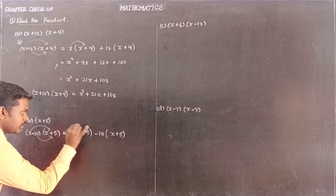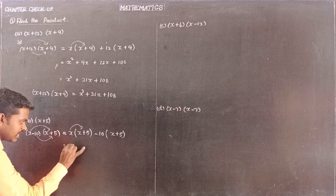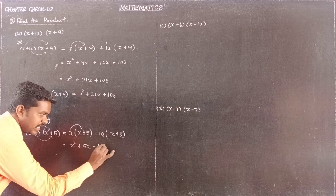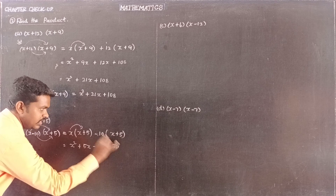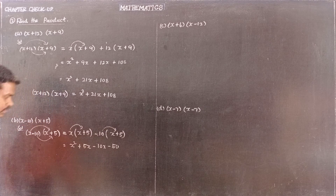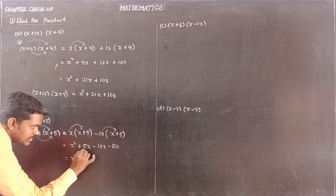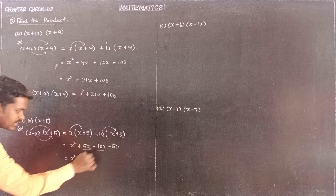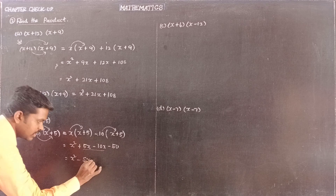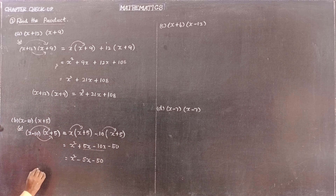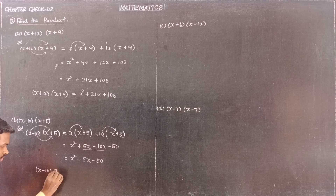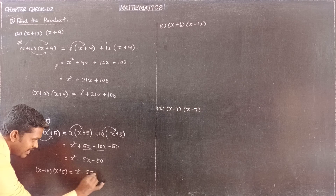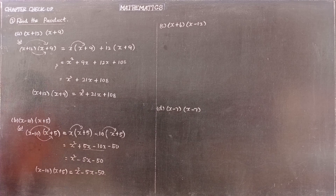Expanding: x into x gives x squared, plus x into 5 gives 5x; minus 10 into x gives minus 10x, minus 10 into 5 gives minus 50. Combining like terms: 5x minus 10x gives minus 5x. Therefore, x minus 10 into x plus 5 is equal to x squared minus 5x minus 50.